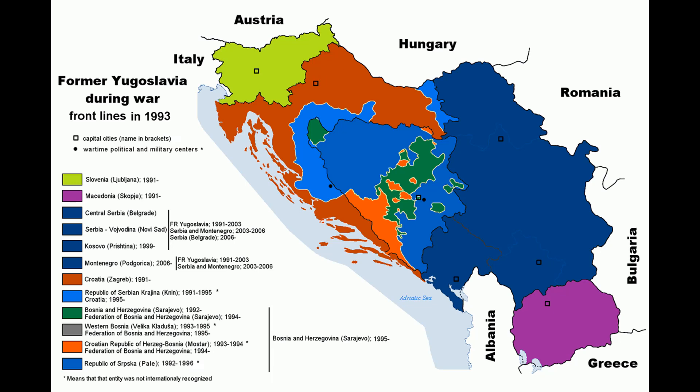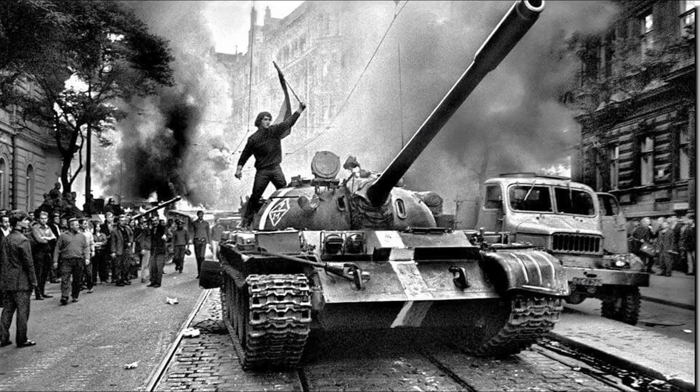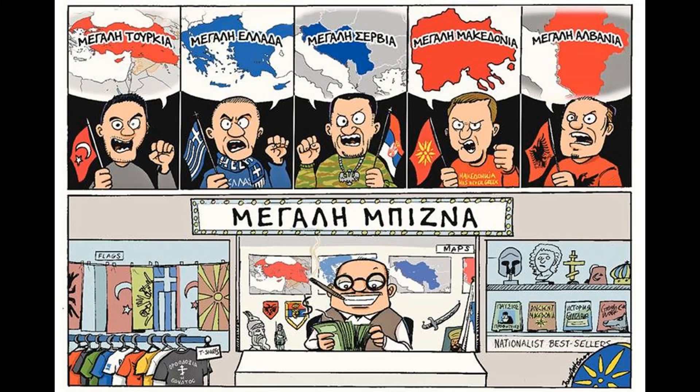Tito was a man who held everything basically together, while in Czechoslovakia people didn't have a strongman figure. And whenever someone wanted to do their own thing, the Soviets just intervened. The mentality was also very different. It is also said that the Czechs are more relaxed and even passive sometimes, while the Serbs, the Croats, or the Albanians are more passionate if they really want to defend something.